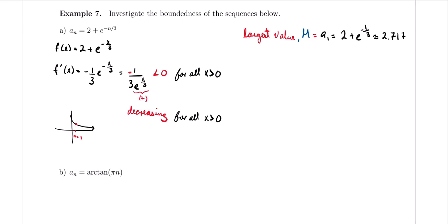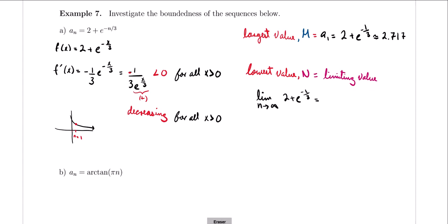Since we're dealing with a decreasing function, the largest value occurs at n = 1. So the upper bound m equals a_1 = 2 + e^(−1/3), which is approximately 2.717. For the lower bound, since it's decreasing, we need the limiting value: the limit as n approaches infinity of 2 + e^(−n/3). As n goes to infinity, e^(−n/3) goes to 0, so the limit equals 2. Therefore the sequence a_n = 2 + e^(−n/3) is bounded above by approximately 2.717 and bounded below by 2 — it is a bounded sequence.